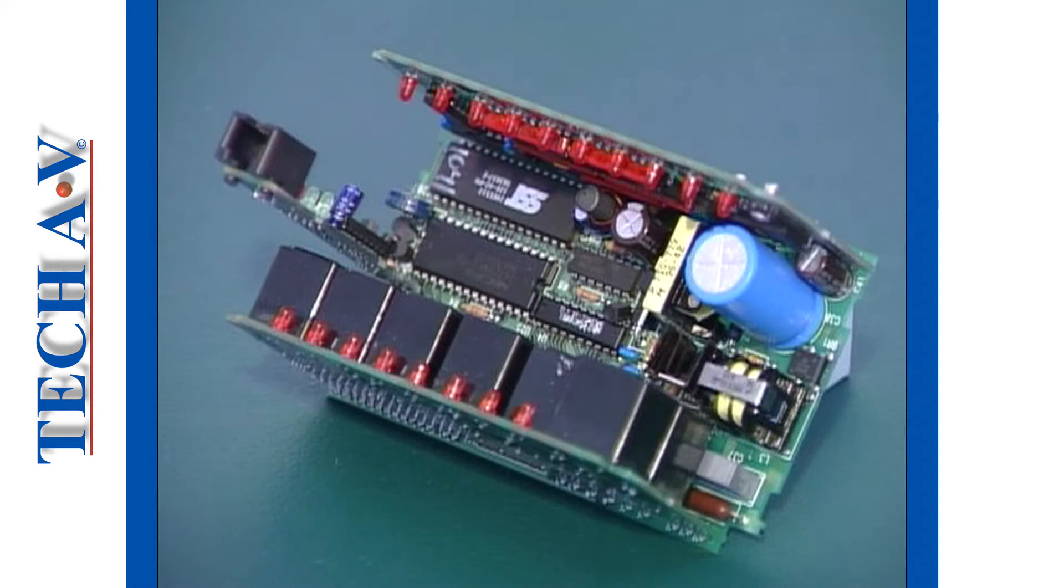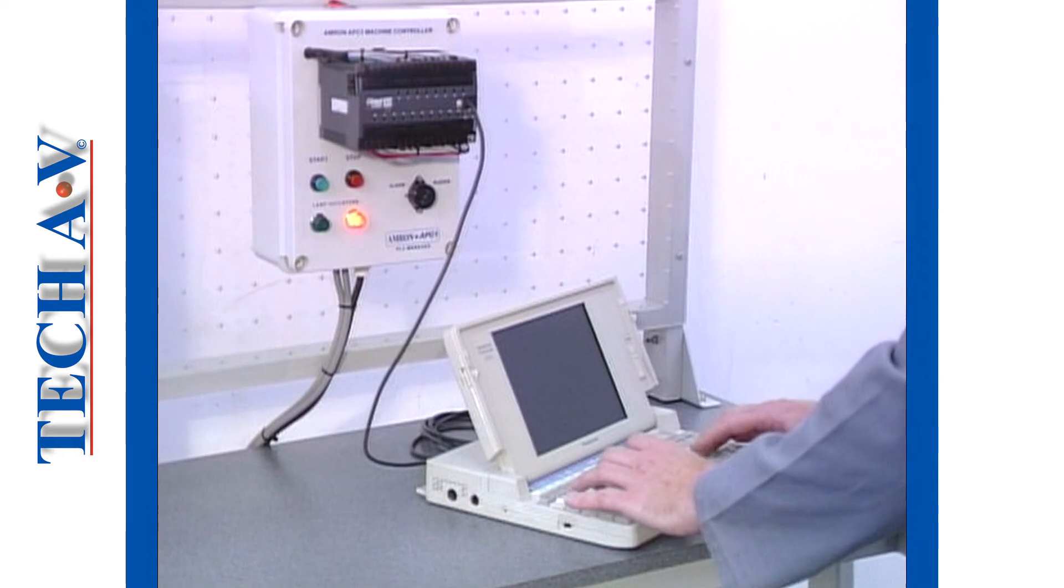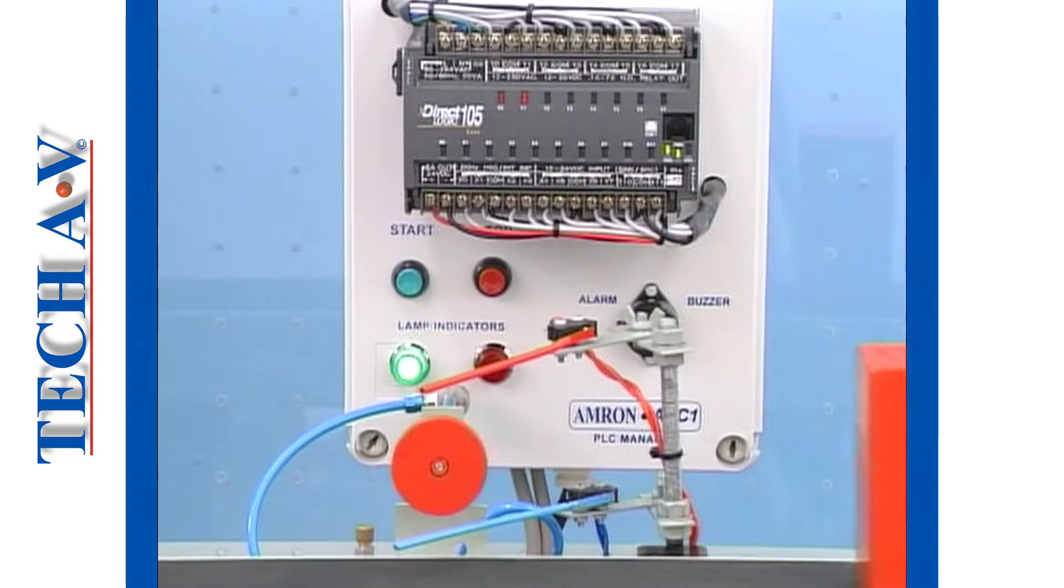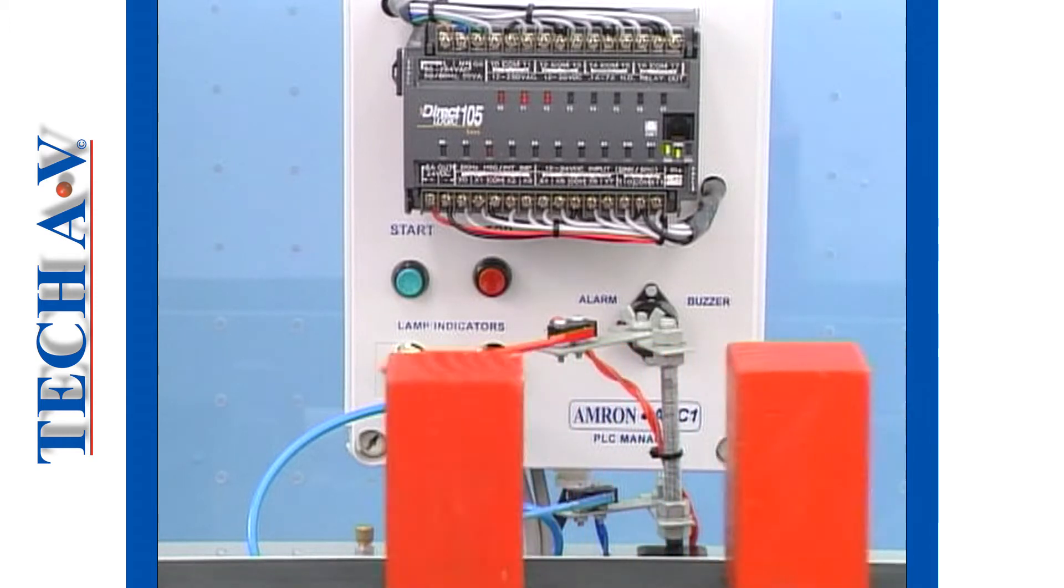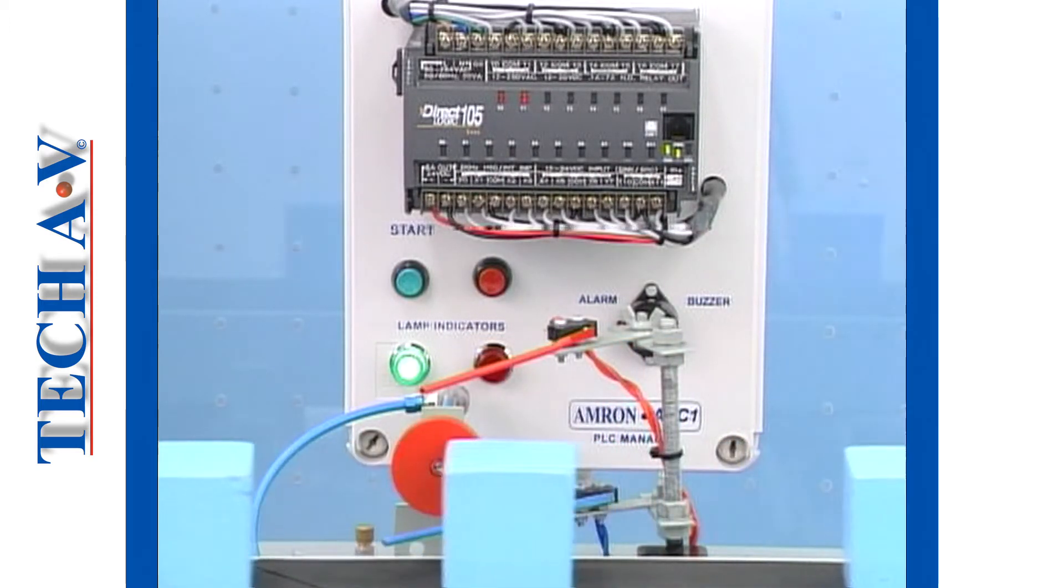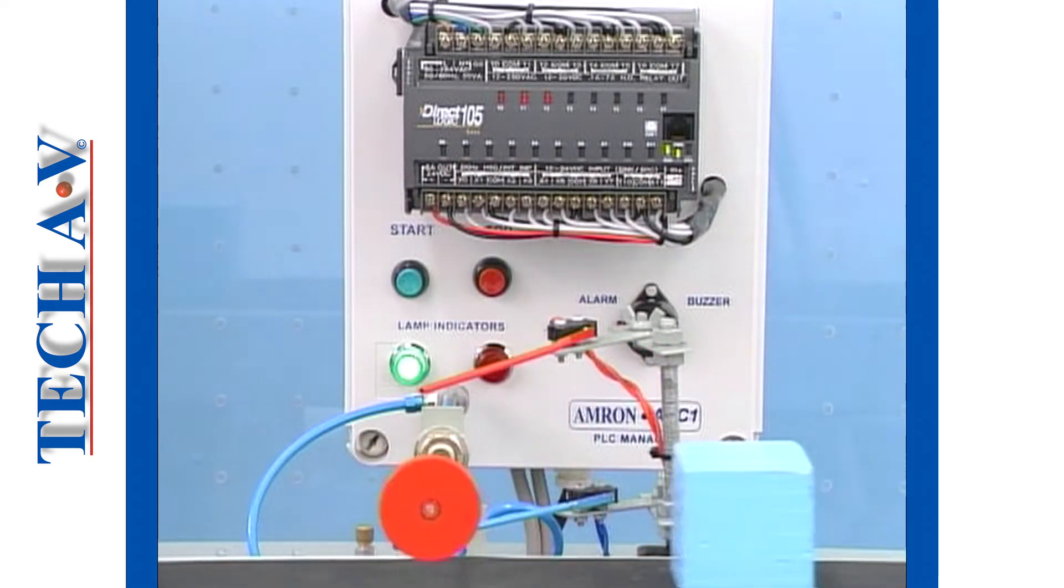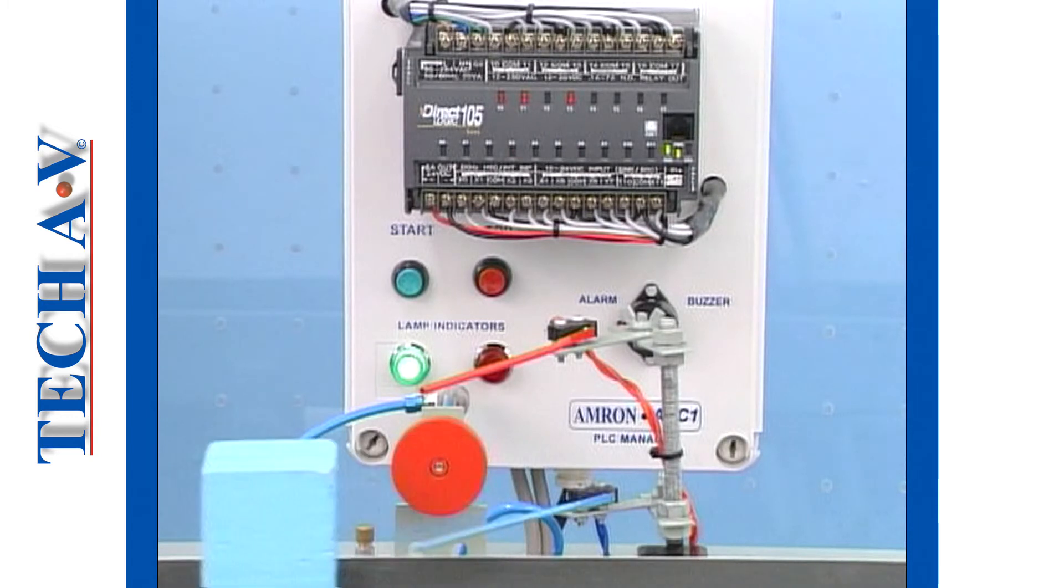And instead of relays, which must be physically wired together, we saw how the PLC uses its own internal relays, timers, and counters to control the system via a programming device. Finally, we explained that PLC logic works in essentially the same way as the hard-wired relay logic by switching and combining on-off voltage signals to direct the flow of power to various output or field devices.